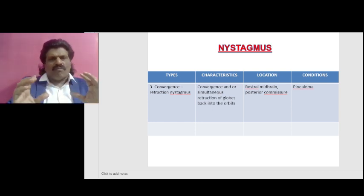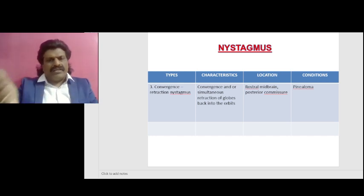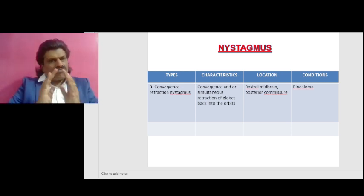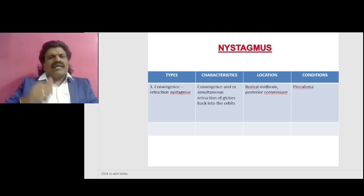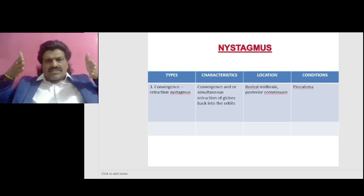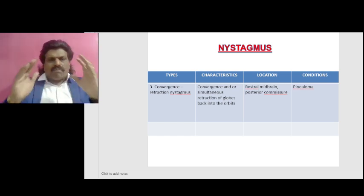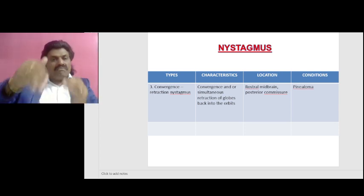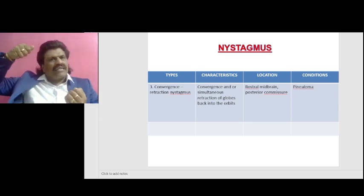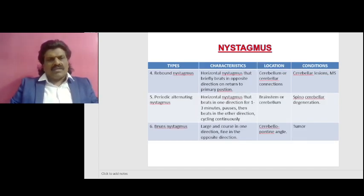When both the superior rectus and inferior rectus fire together, there is retraction. There is no divergence because the sixth nerve is normal and the lateral rectus is normal — the lesion being at the top of the midbrain, such as pinealoma or dorsal midbrain syndrome, while the pons is intact. Therefore, there is convergence due to supranuclear simultaneous activation of both medial recti, and retraction due to simultaneous activation of both superior recti and inferior recti.